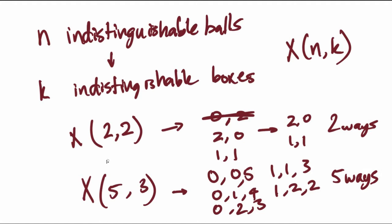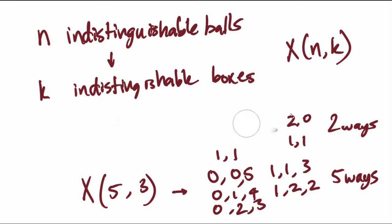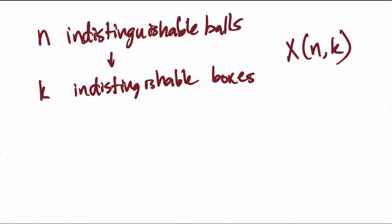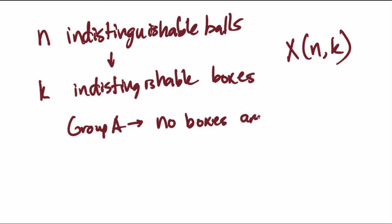The first thing we notice is that there are two cases for every single one of these problems. For every combination of balls in those boxes, they fit into one of two categories. Group A is where no boxes are empty, and the second group is where there is at least one empty box. Let's approach Group A first and see if we can subdivide this question. Assuming no boxes are empty, how many ways can we put n indistinguishable balls into k non-empty indistinguishable boxes?